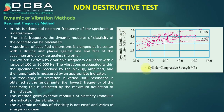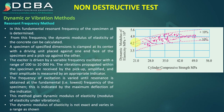The dynamic modulus of elasticity correlates with cylinder compressive strength through a graph, with a variation of plus or minus 10 percent. For example, a dynamic modulus of approximately 4.2×10⁴ MPa corresponds to a compressive strength within a plus or minus 10 percent window. This concludes the resonant frequency method.